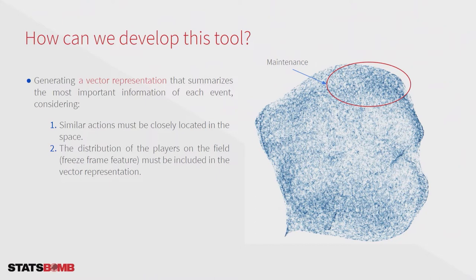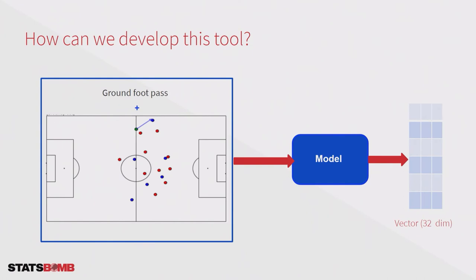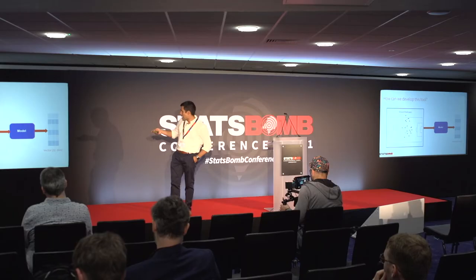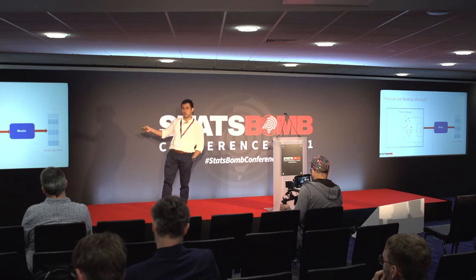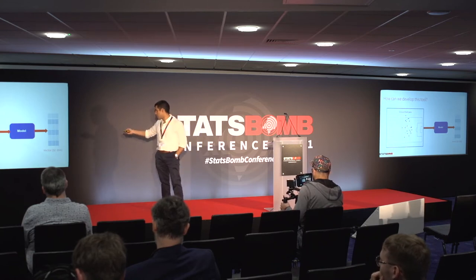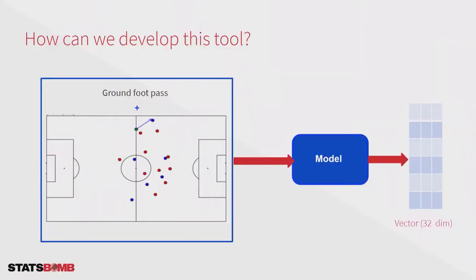To build our models, we just need a few examples and then we can build a model with good performance. I want to fit a model with some description of the action plus the position of the players when the action occurs, and as an output I want a vector representation of this action. I call this vector representation embeddings.